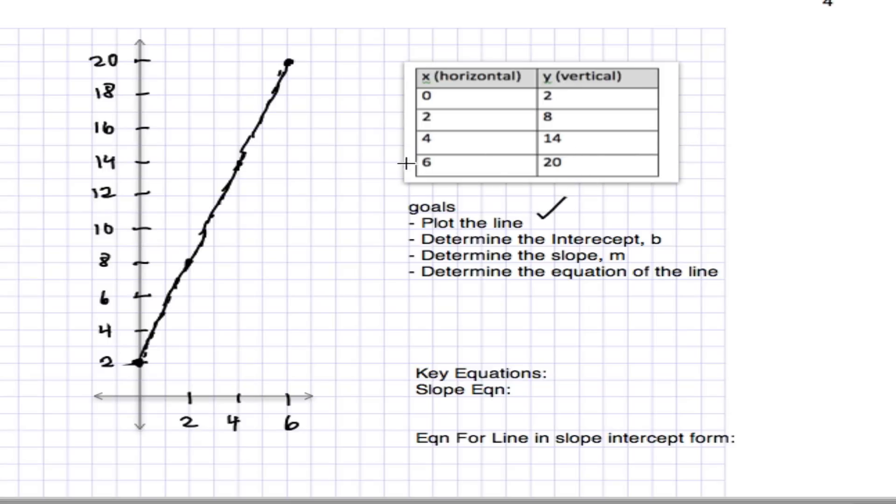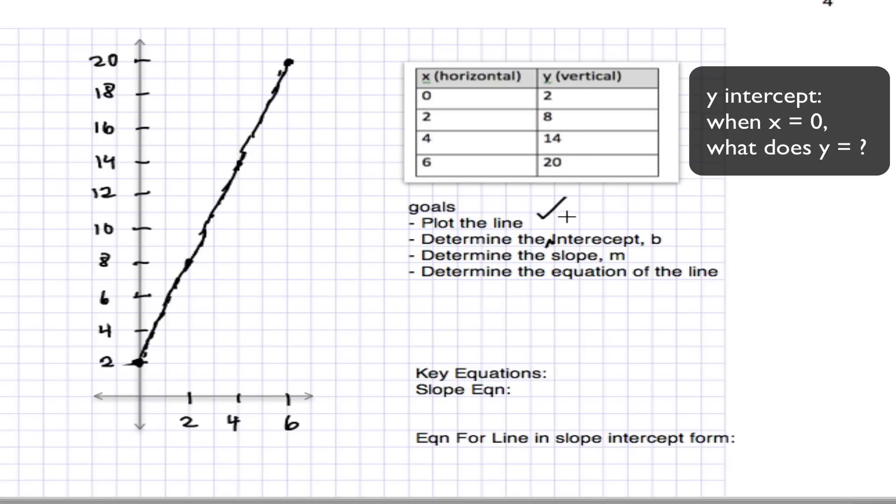Now, the next thing we want to do is determine the intercept. Well, the intercept, we read off the graph. So when we say the intercept, what we really mean is the y-intercept. And that's right here. So the intercept is 2.